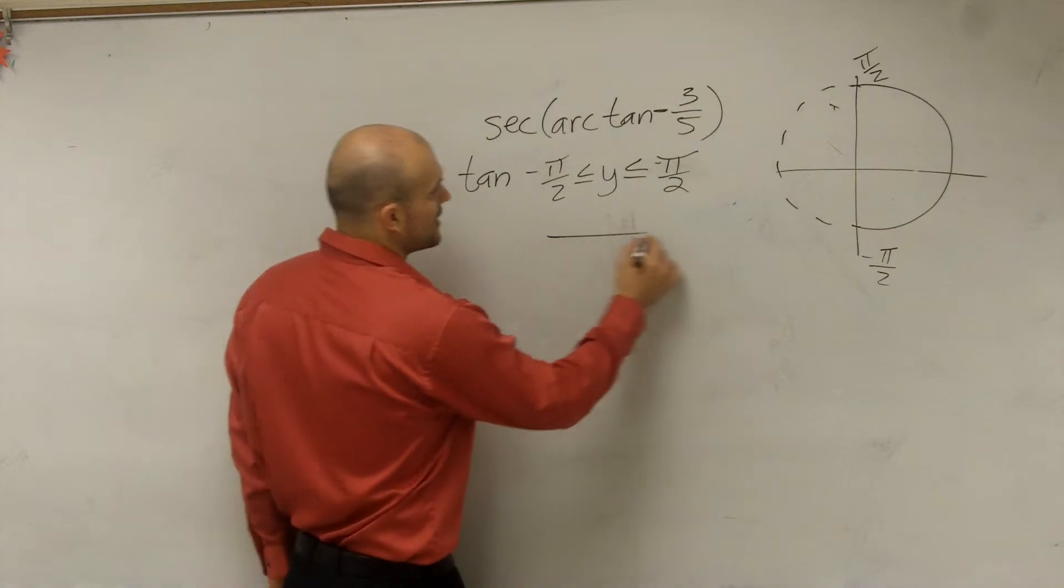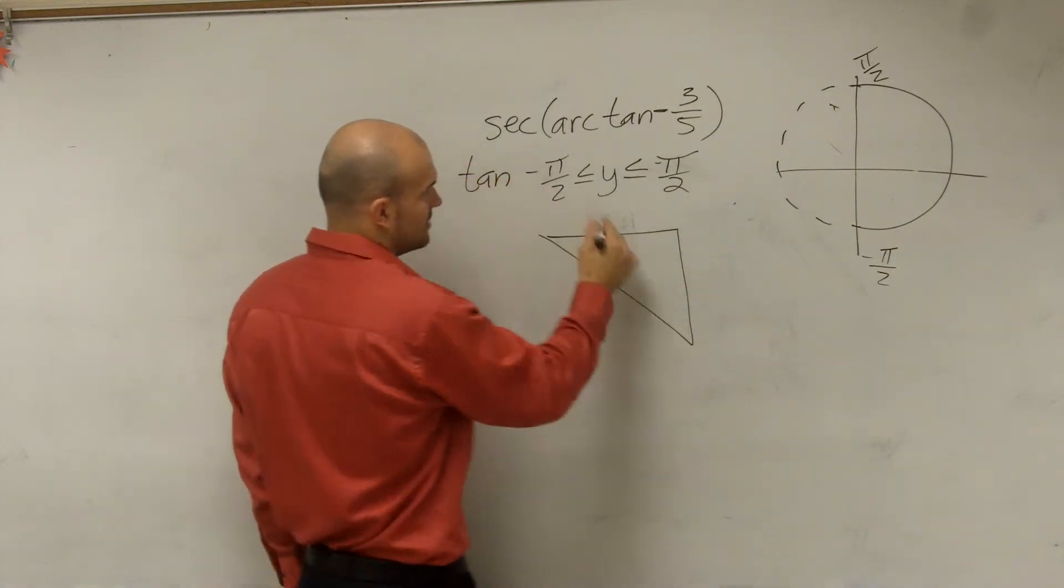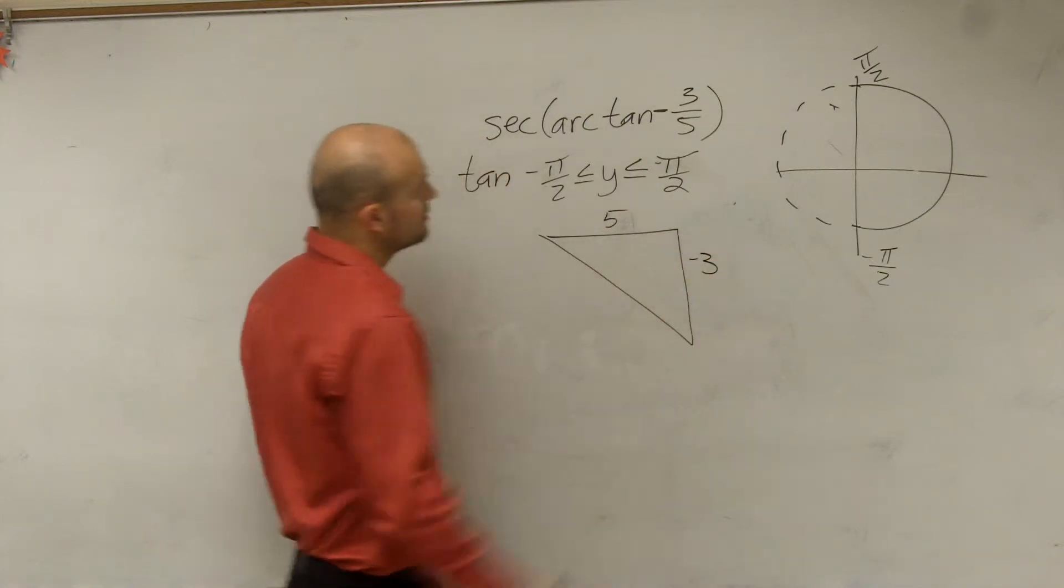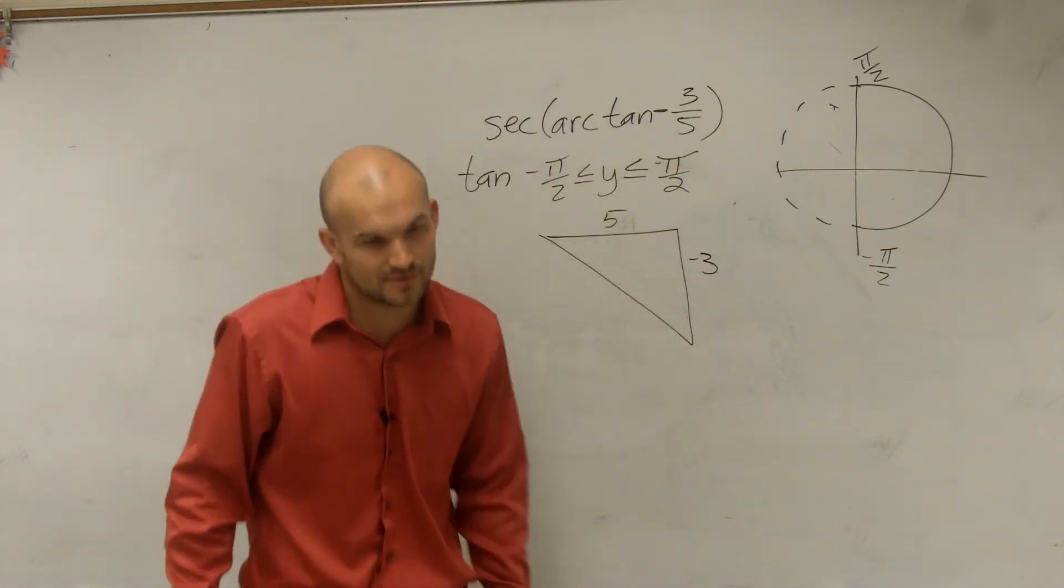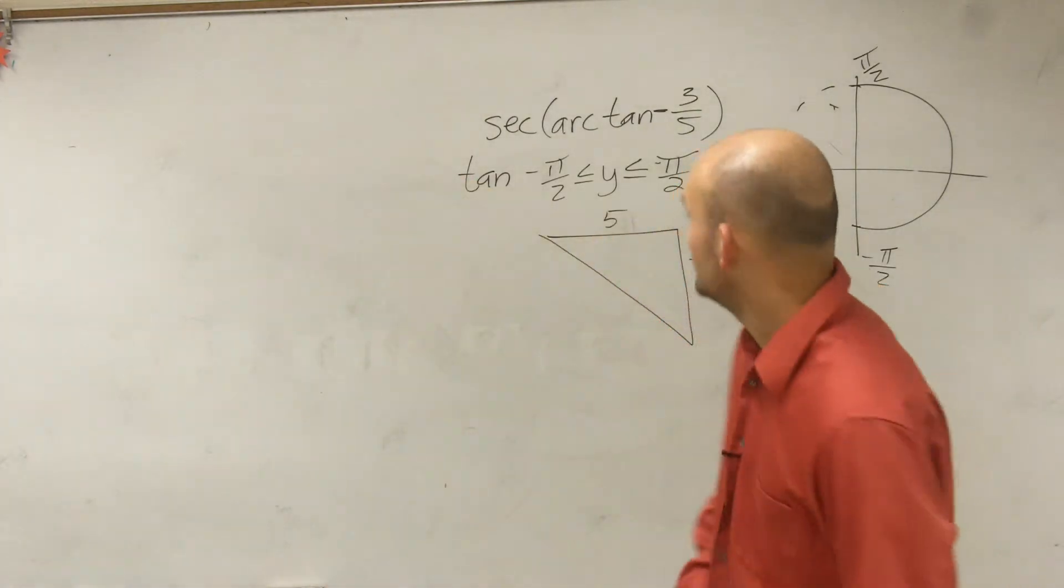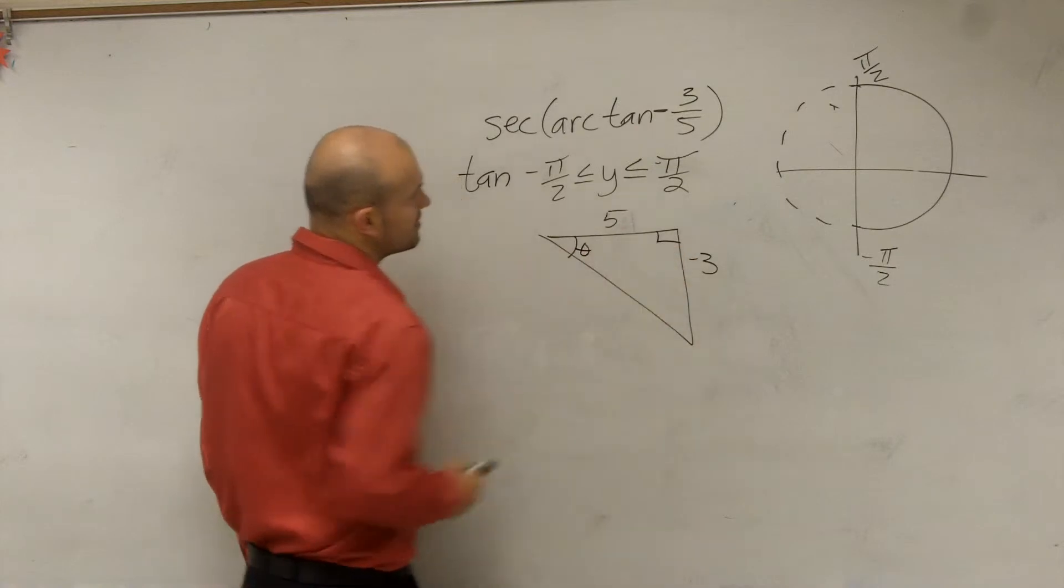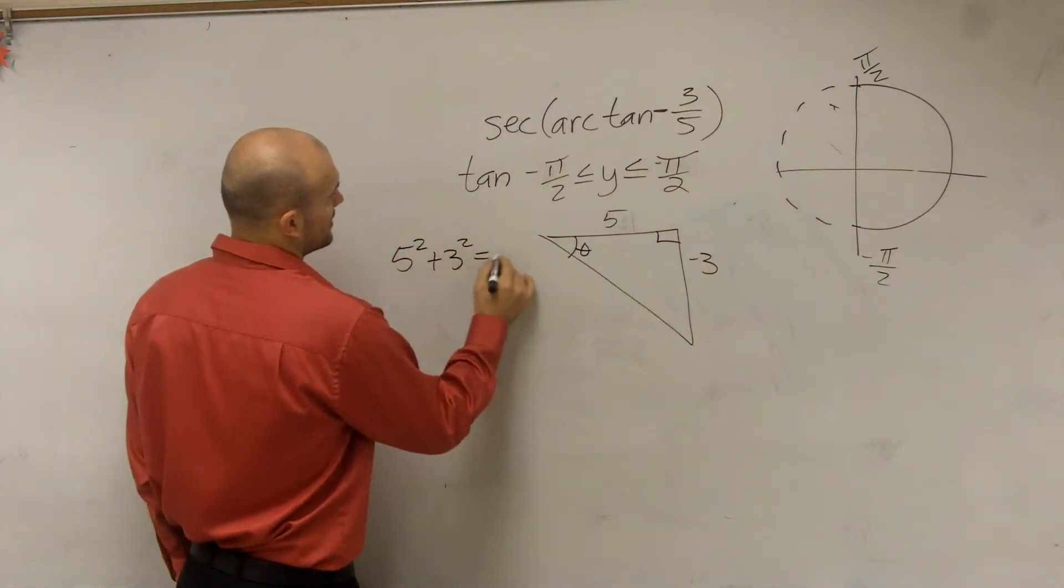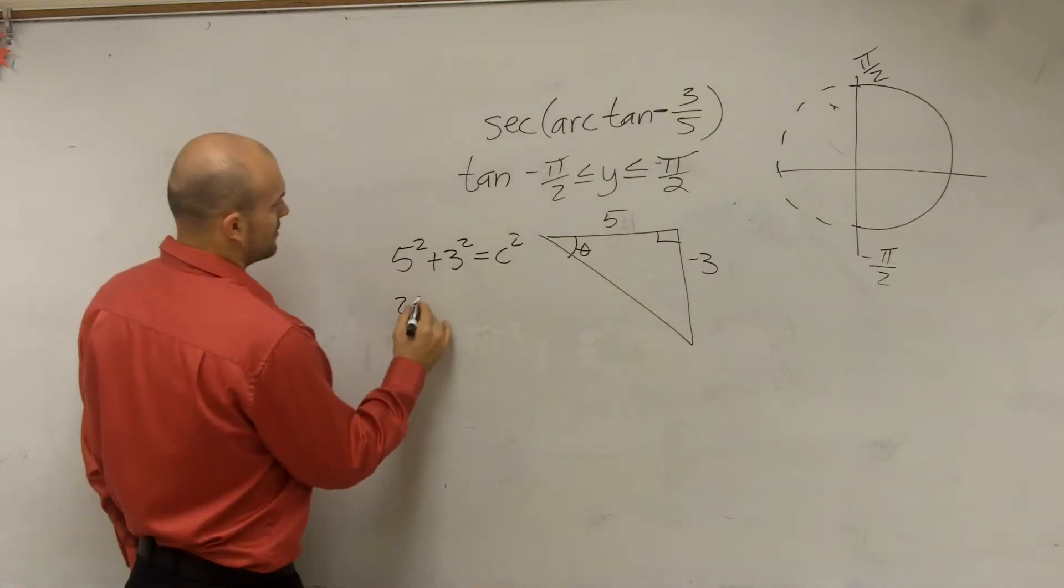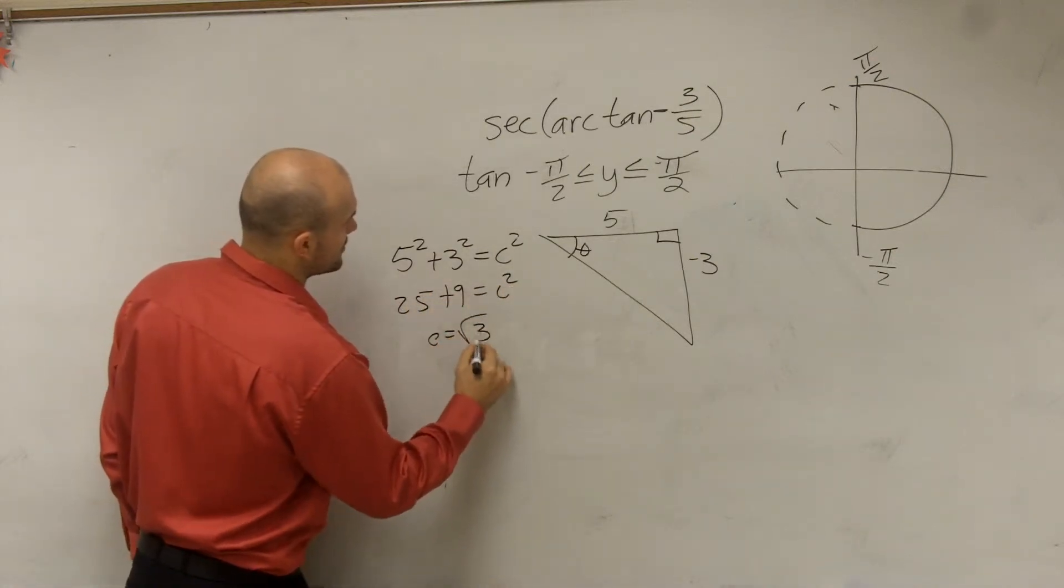So now that I have my triangle, which is going to be, what was it, 5 comma negative 3. So now to figure out the rest of this, I just need to use my Pythagorean theorem, right? So to use Pythagorean theorem, here's going to be my theta, my right triangle. So we have leg squared plus leg squared equals hypotenuse squared. 25 plus 9 equals c squared. c equals the square root of 34.